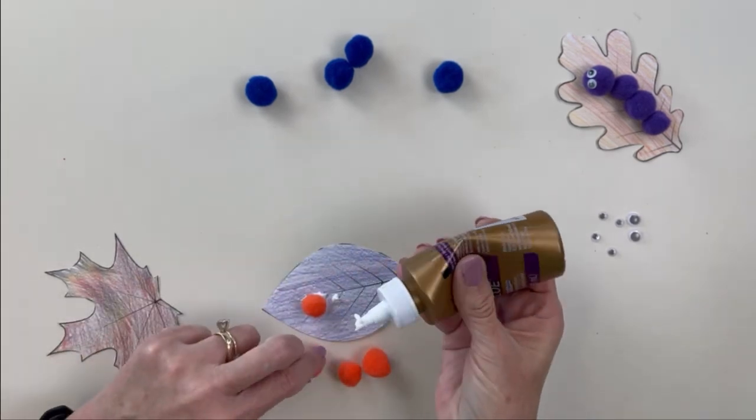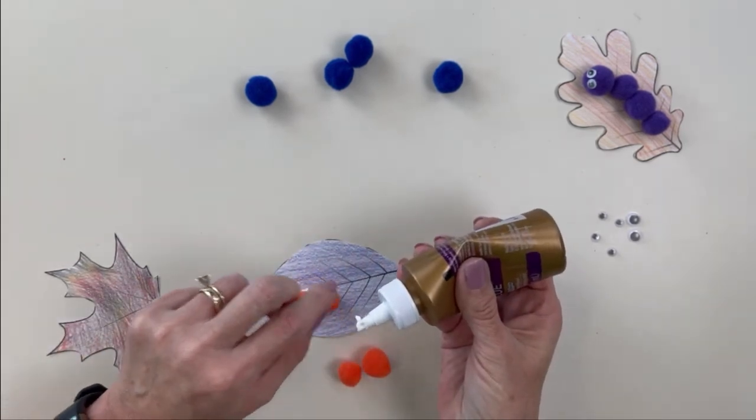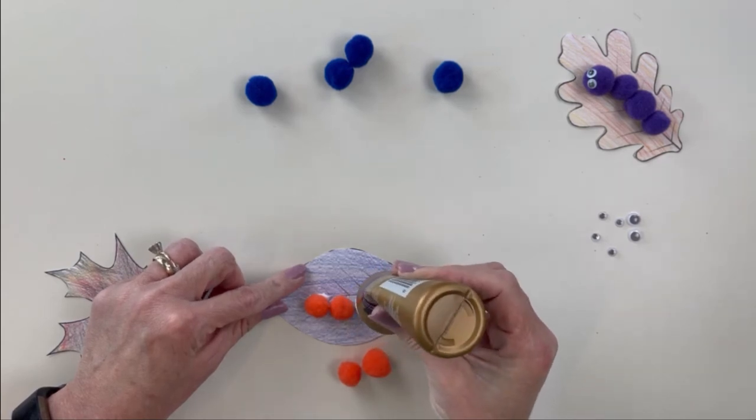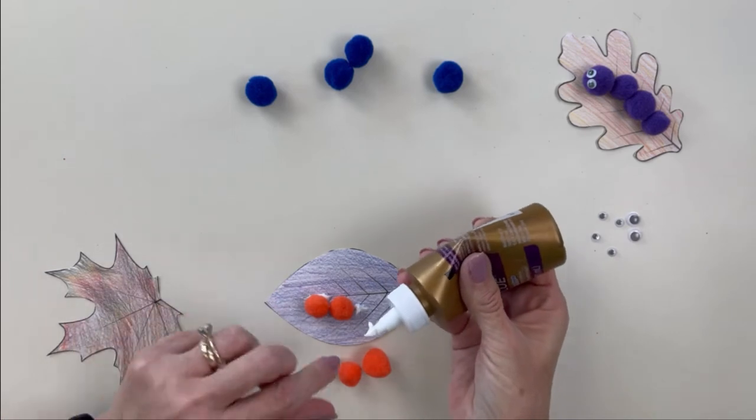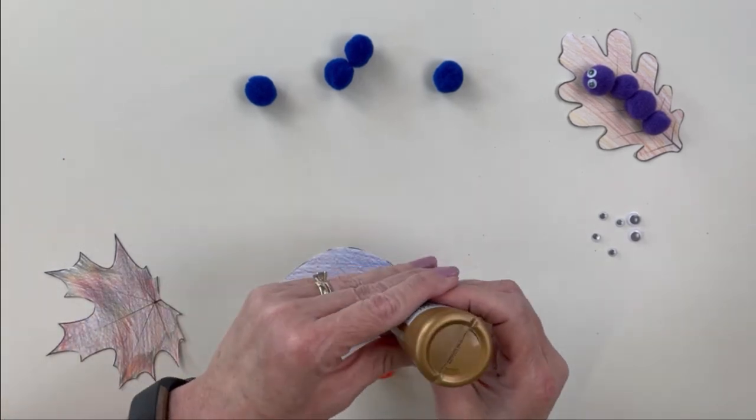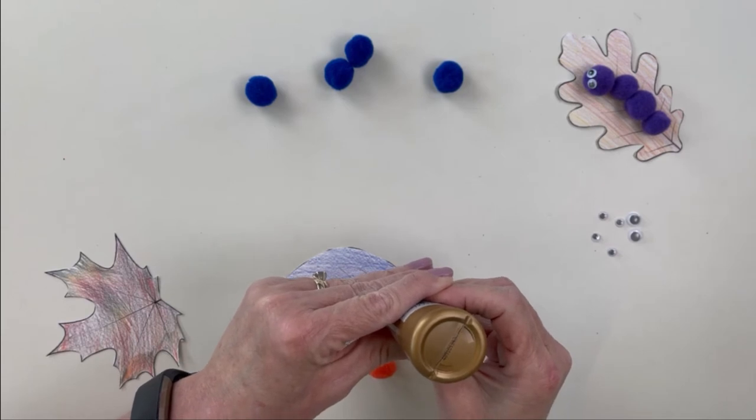And we're going to make this one turn just a little bit, because you don't want your caterpillar going exactly in a straight line on the leaf, because you know they're all over the leaf. And one more. Okay, make sure you've got them secure on there.